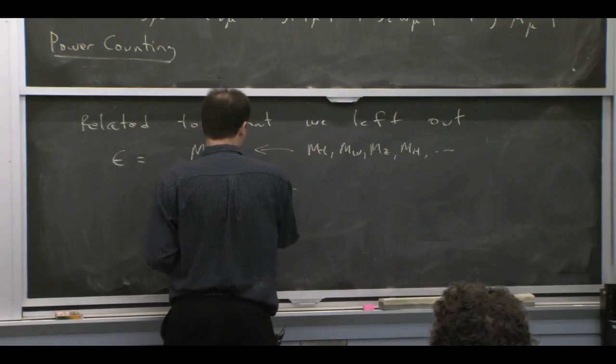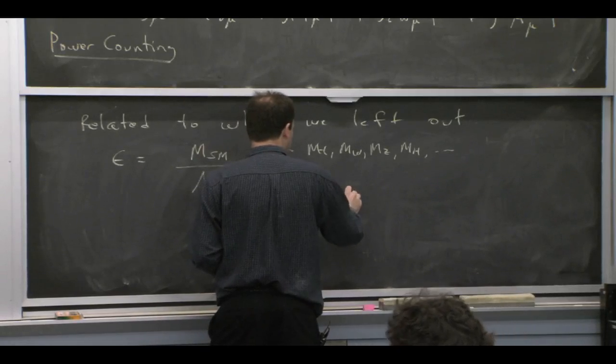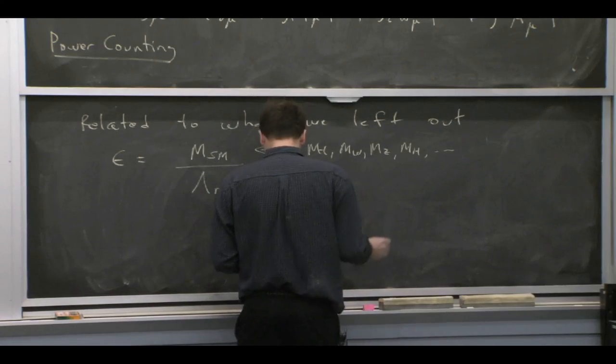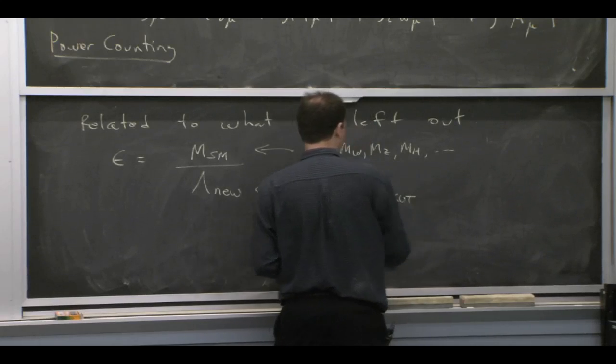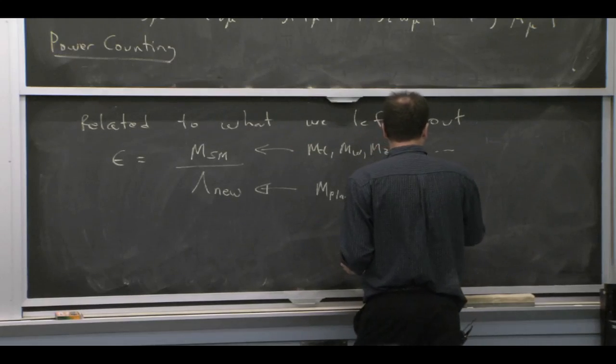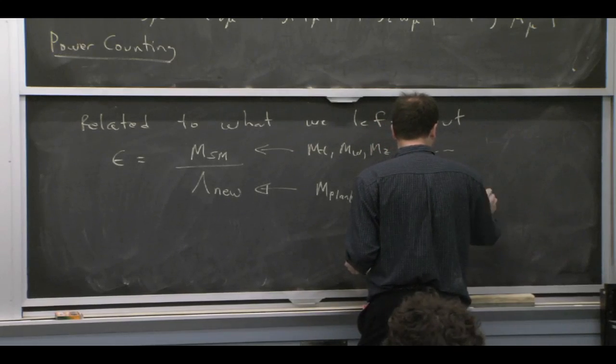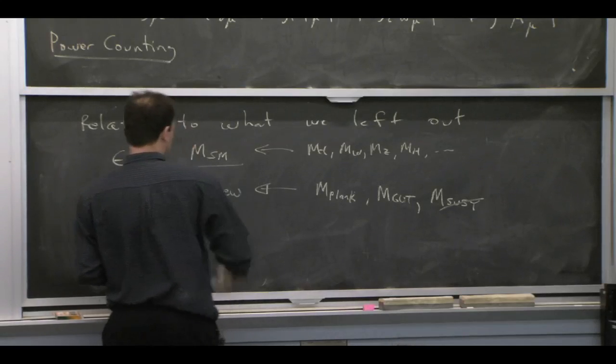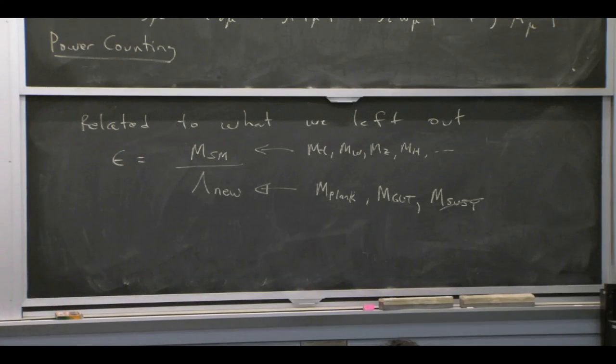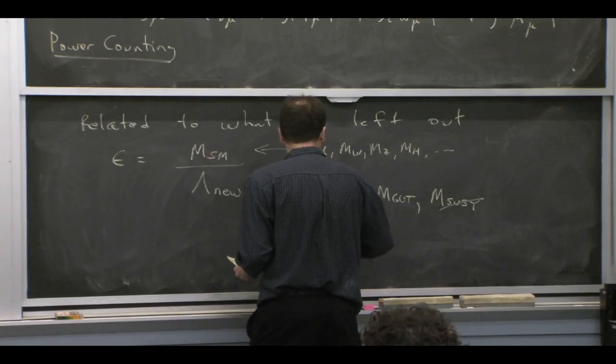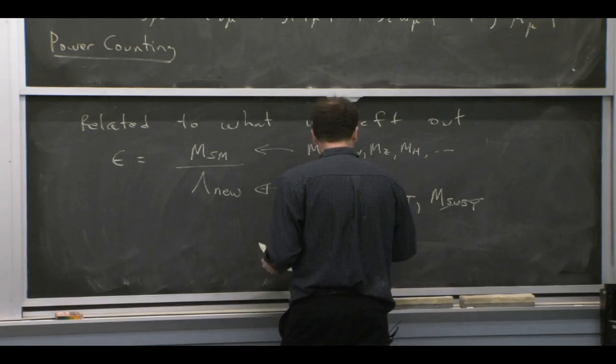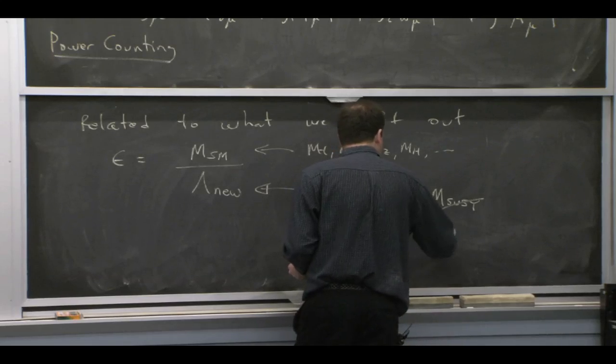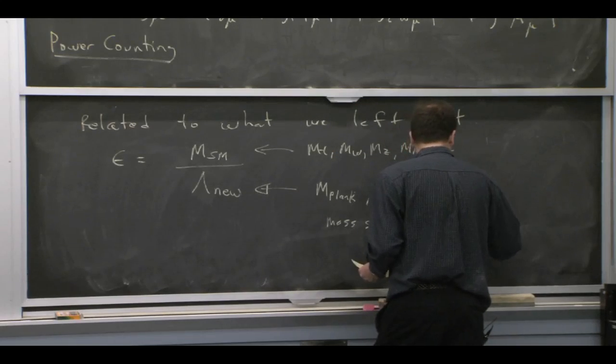In the denominator, well, certainly something like M Planck is left out of our description here. If we had some grand unified theory, that goes in the denominator. If we had supersymmetry and we broke it, that would go in the denominator. So from this effective field theory point of view, any physics that we've left out of the standard model description is anything that generates a higher energy scale, that goes in the denominator. And this is what we expanded.